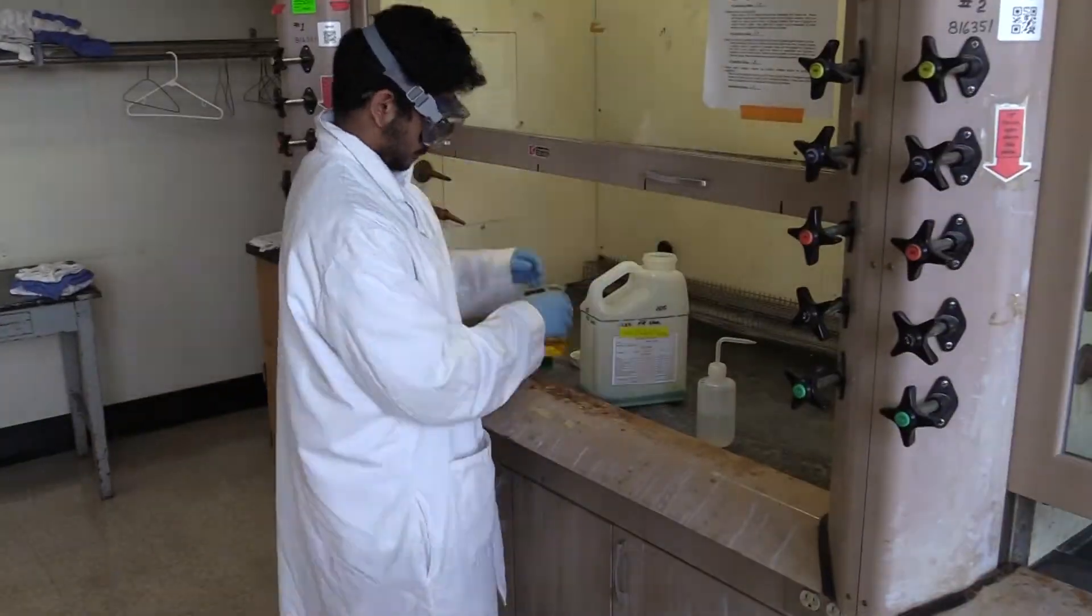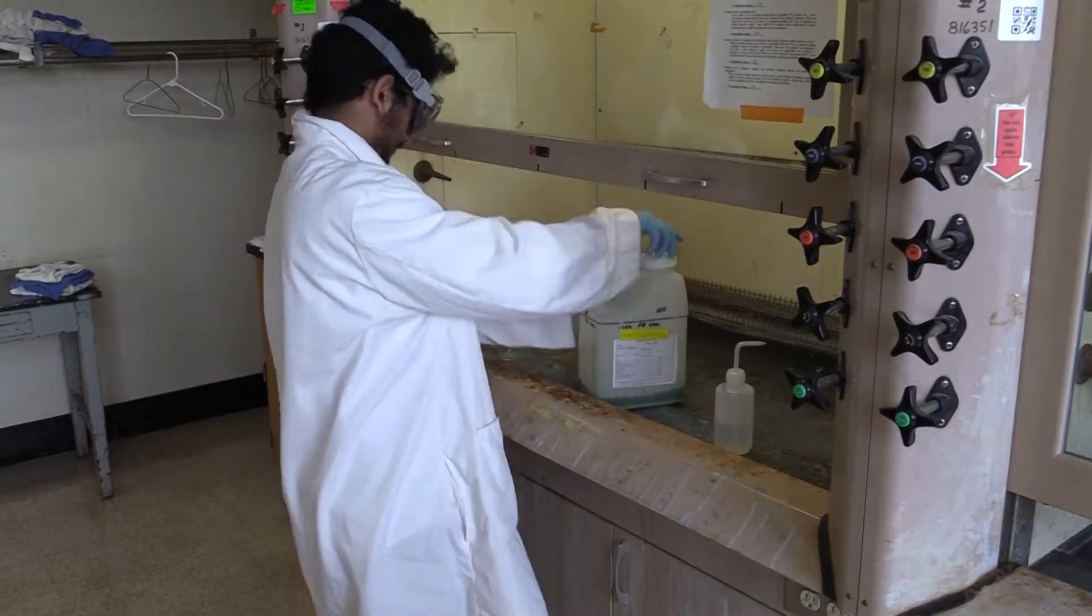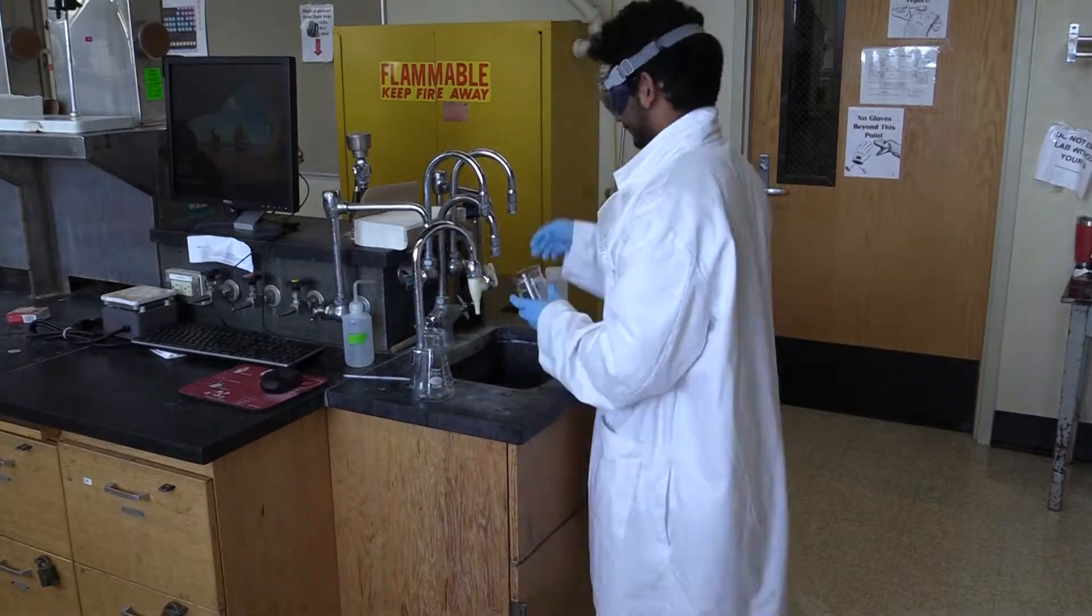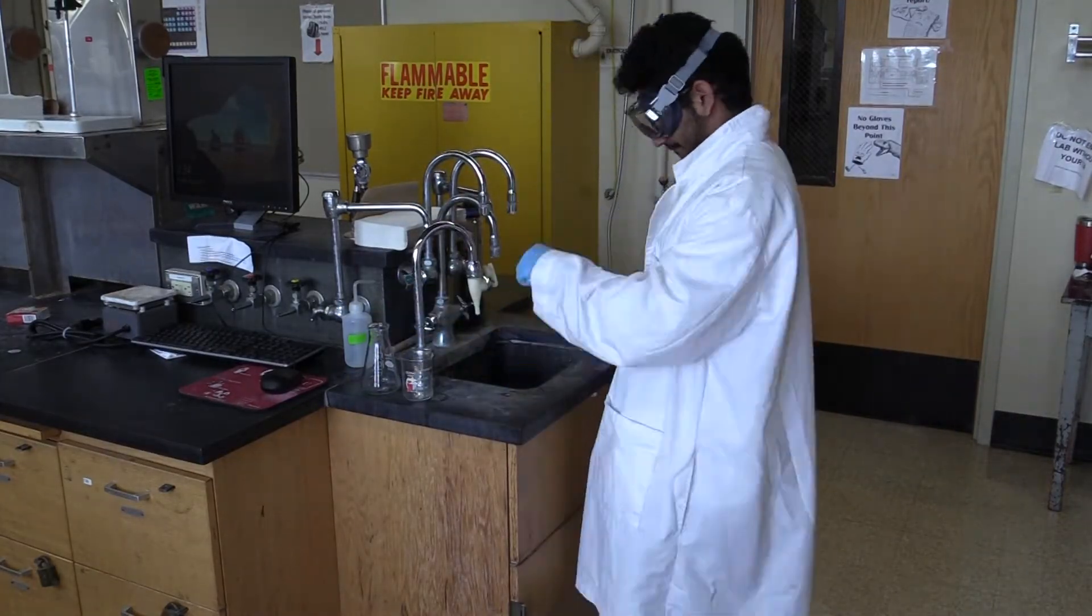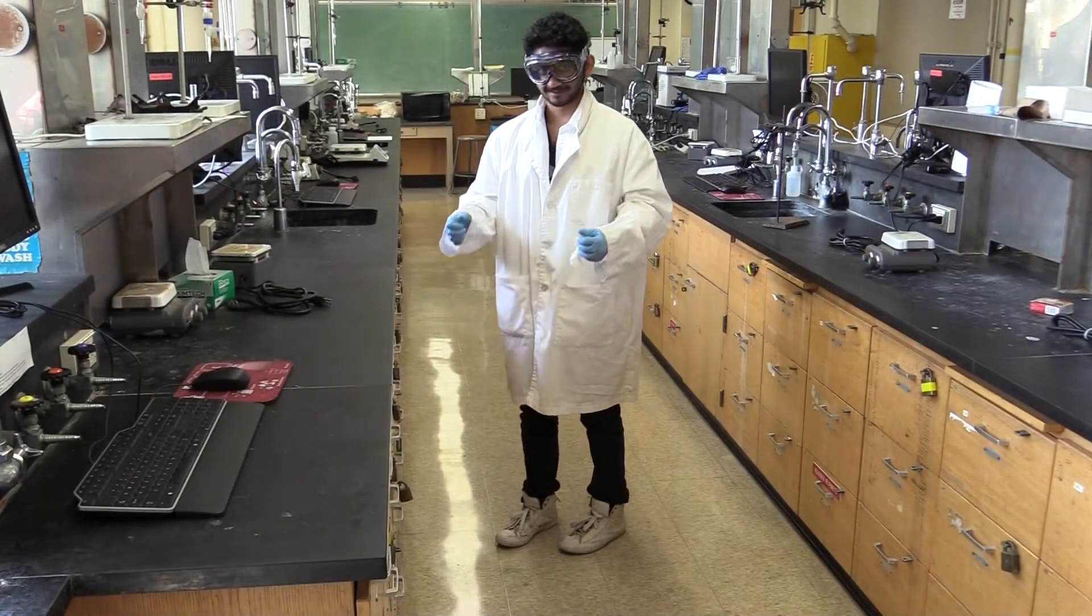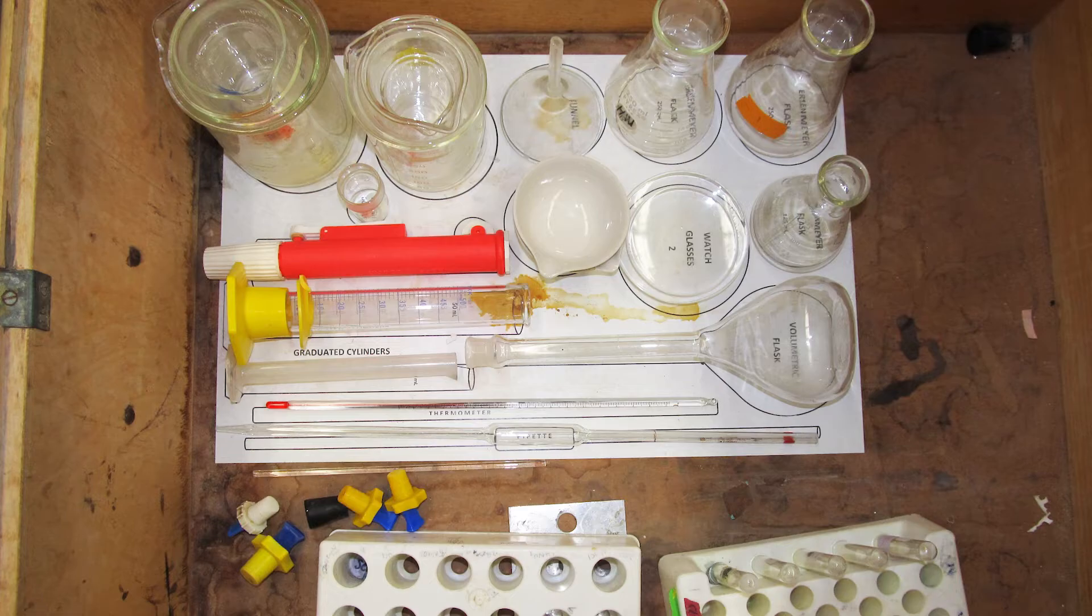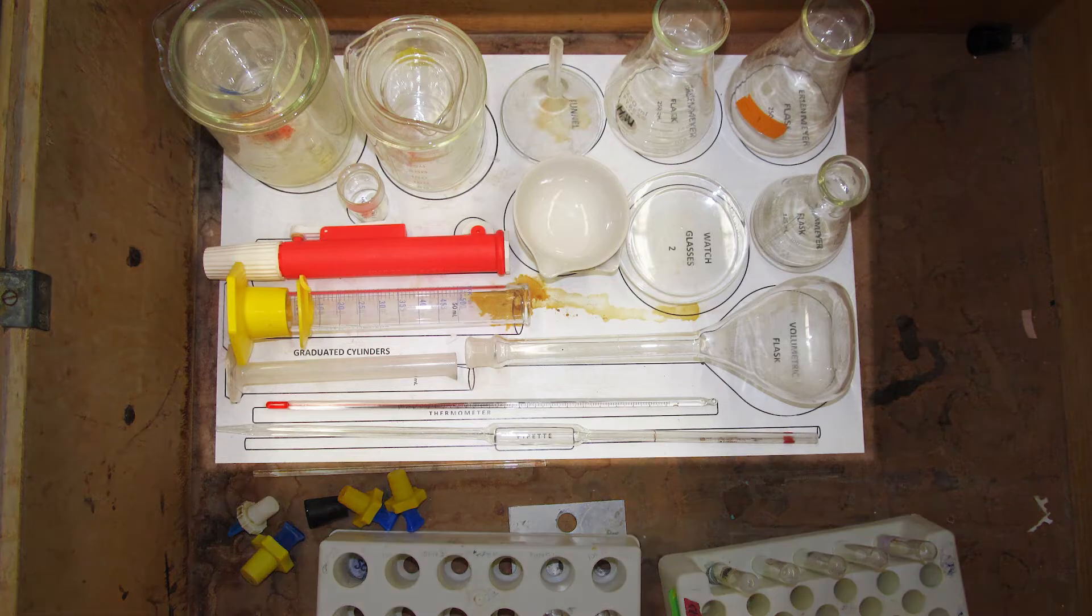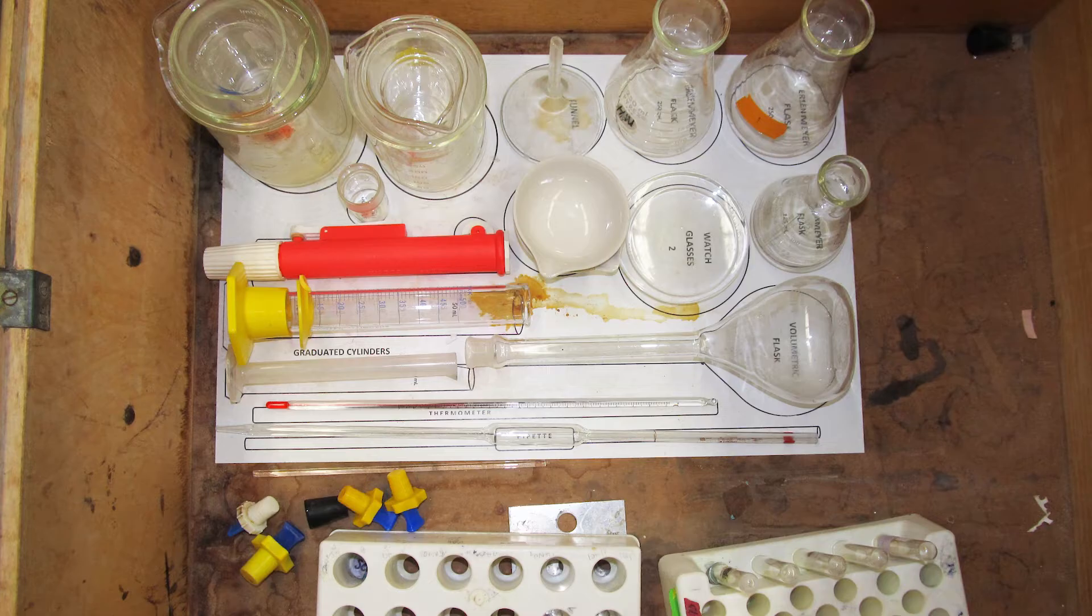When you're done with your experiments, you need to make sure your workspace and all of the glassware in it is cleaned up. This means that you've disposed of all of your waste in the proper waste container, scrubbed and rinsed your glassware with the eye water, and put all of your equipment back where it belongs. To help you keep track of your glassware, most of our lab rooms have these placemats in the drawers that tell you what should be in them. Please make sure to line up everything right where it should be before you leave.